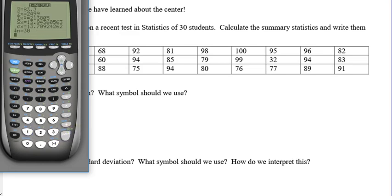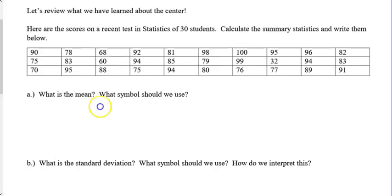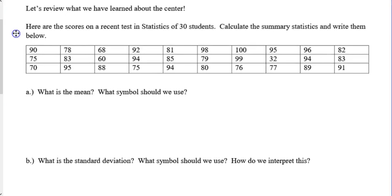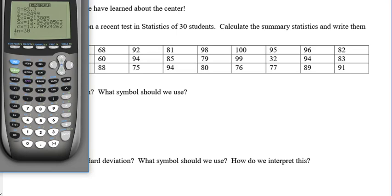So, the question is, what's the mean and what symbol should we use? Well, it's the very first thing on it. So, we're going to write our notes. The symbol we use for mean is X with a bar over it. We just call it X bar. And our X bar was 83.3.